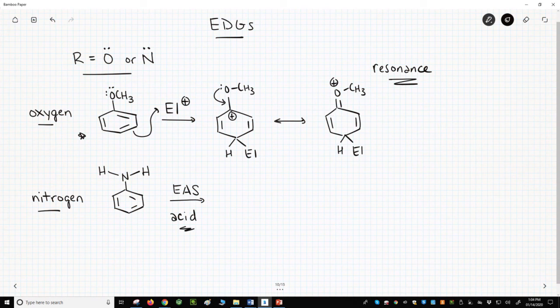Simple nitrogen groups are basic. That means something like a simple NH2 or NR2 will be protonated under these acidic conditions.